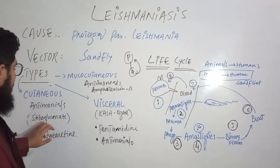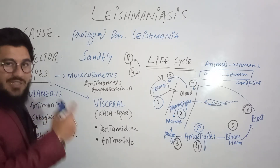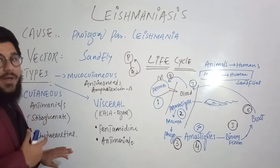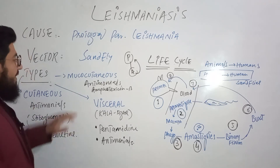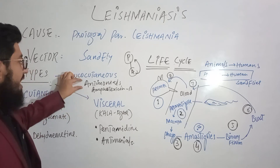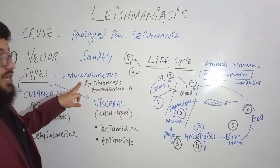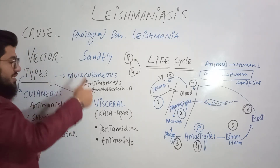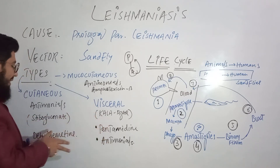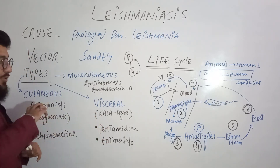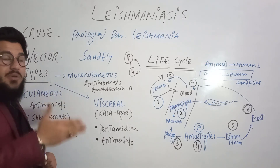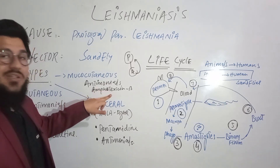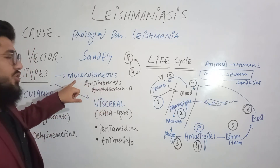How do they act? Antimonials like sodium stibogluconate are responsible for destroying the membrane of the Leishmanial parasite, whereas dehydroemetine is responsible for destroying the proteins of the Leishmanial parasite membrane. It is important to note that antimonials are placed in all three types of Leishmaniasis. Then for mucocutaneous Leishmaniasis, we also have antimonials, and additionally amphotericin B — which we studied in antifungals — is also responsible for destroying the membrane.